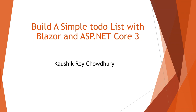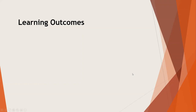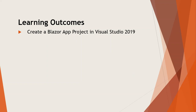Welcome all. Today I am going to show you how to build a simple to-do list with Blazor and ASP.NET Core. The learning outcome is: create a Blazor app project in Visual Studio 2019 and build a simple to-do list. It is absolutely essential that you have gone through my earlier tutorial on getting started with Blazor, where we created a simple Blazor app in ASP.NET Core 3 with Visual Studio 2019. I am not going to repeat those things, so please go through that tutorial before coming back to this.